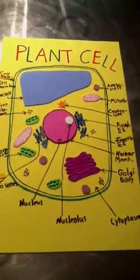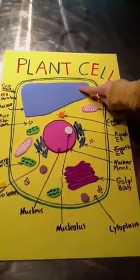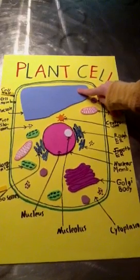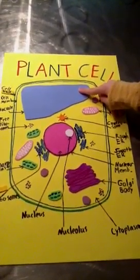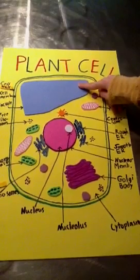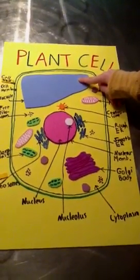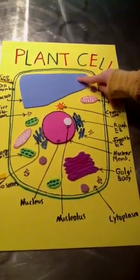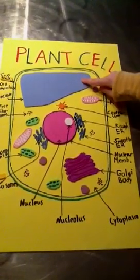The vacuole is a sac that plays roles in digestion and the release of waste materials in the cell. In plant cells, it is big because it also stores nutrients.